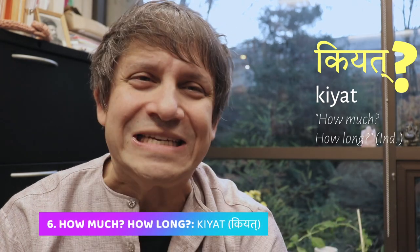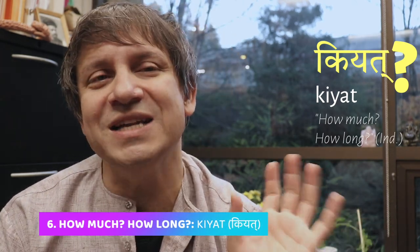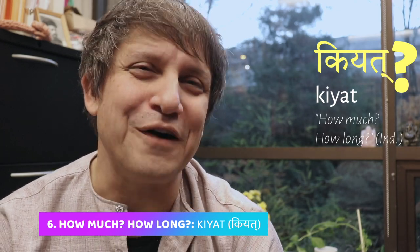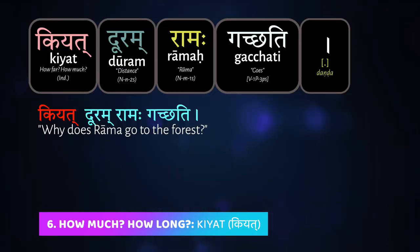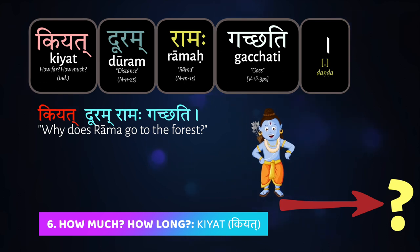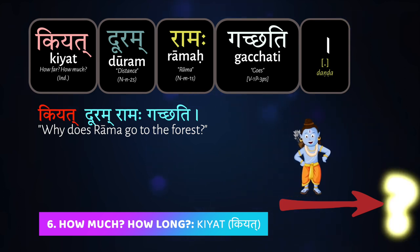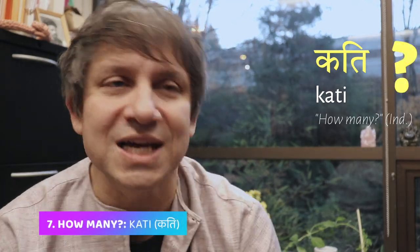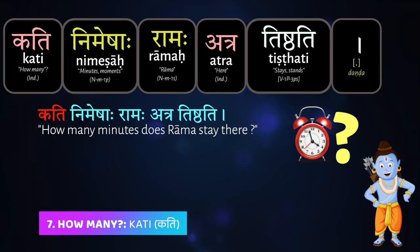There are a couple of other indeclinable question words worth mentioning. Kiyat means 'how much,' 'how long,' or 'how far.' So you can ask 'Kiyat dūram Rāmaḥ gacchati' — how far is Rāma going? There's also kati, which means 'how many.' So you can ask 'Kati nimeṣāḥ Rāmaḥ atra tiṣṭhati' — how many minutes is Rāma standing there?